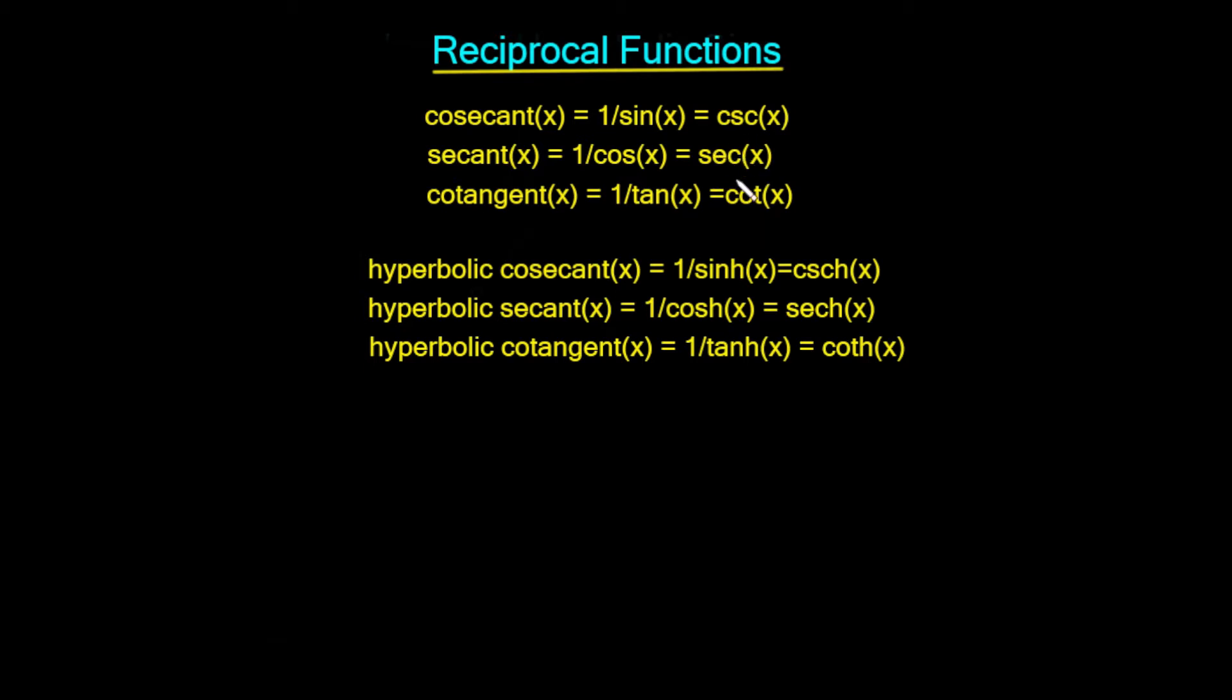Cosec x, sec x, and cot x. Now we can do the same with the hyperbolic equivalents in order to generate the 1 upon sinh x, the 1 upon cosh, and the 1 upon tanh x, which gives us these three functions here.